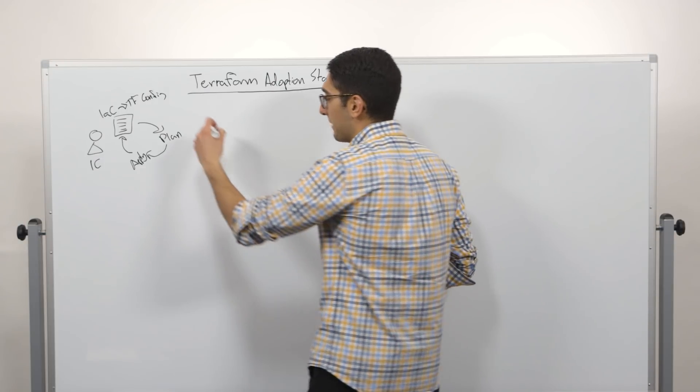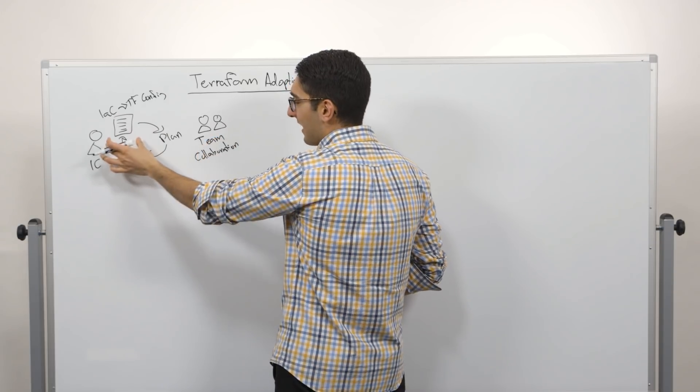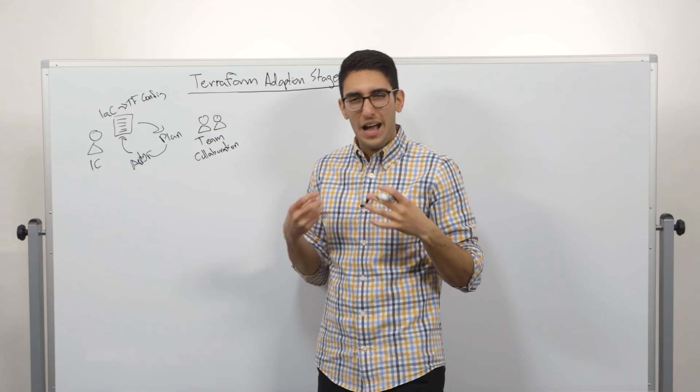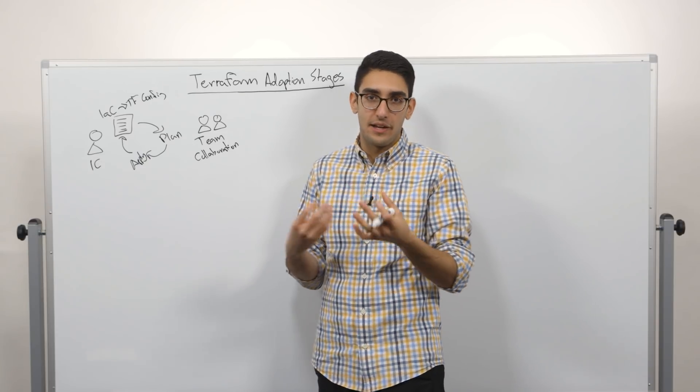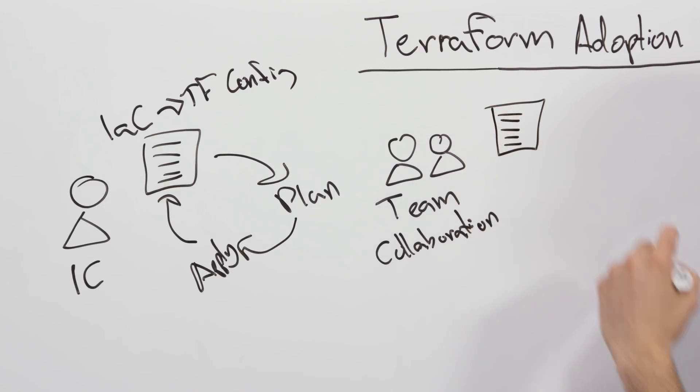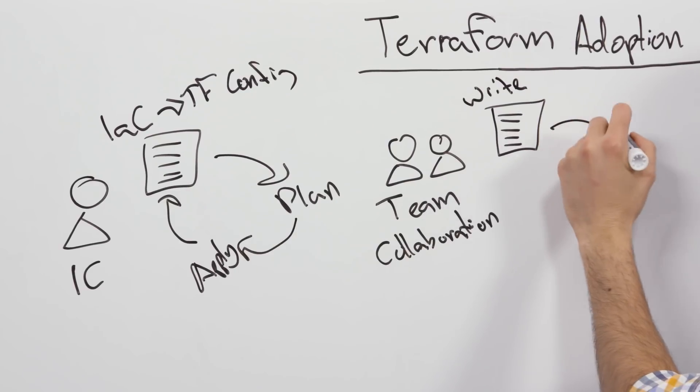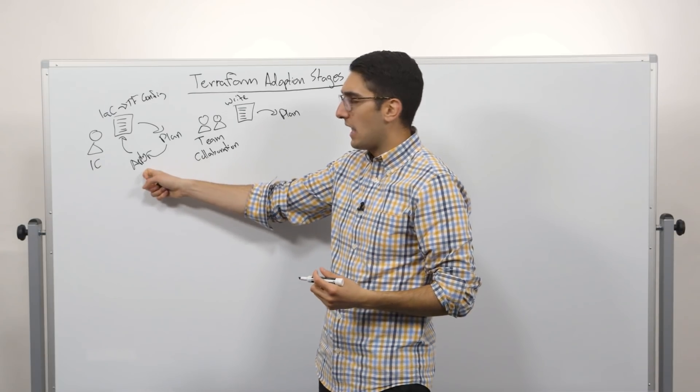Now what happens as we start to go to a team? At the moment we go to a team, we introduce a set of collaboration challenges. Specifically, we're now modifying a single definition of what this infrastructure should look like, but we have multiple people doing it. How do we ensure that we have a consistent definition of our infrastructure and that we're making these changes safely, that we're not stepping on each other's toes? The flow changes a little bit. It still starts with practitioners who are locally writing or modifying this configuration. They might even be running a plan locally to determine are these changes safe. But now instead of just applying it ourselves, we add an additional step.